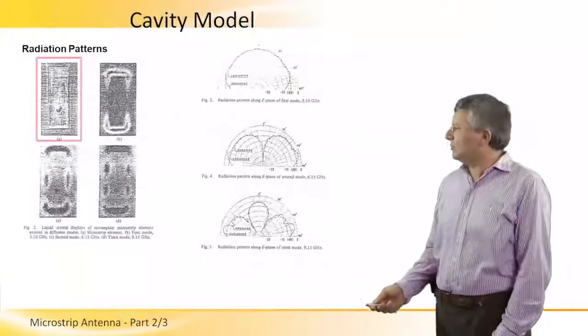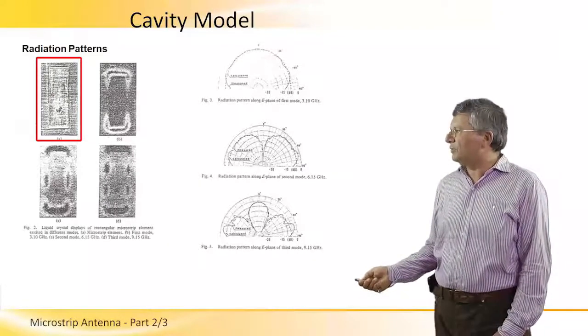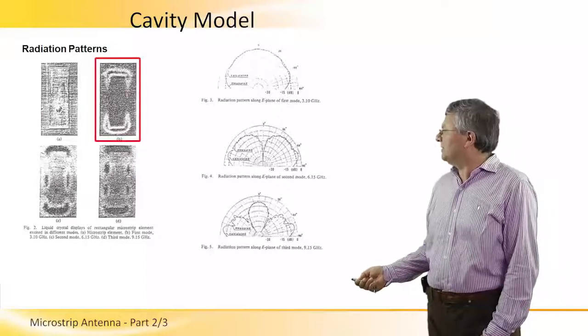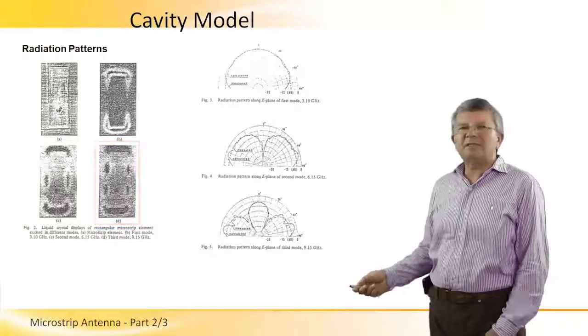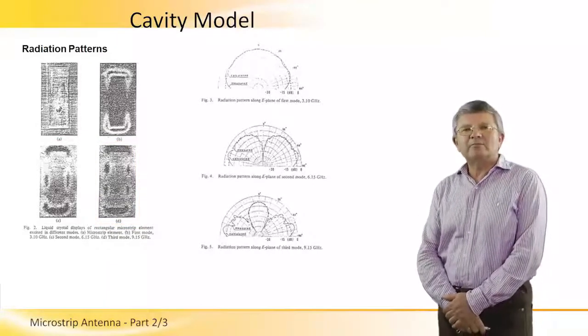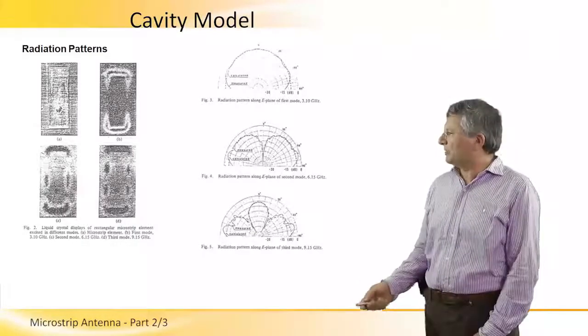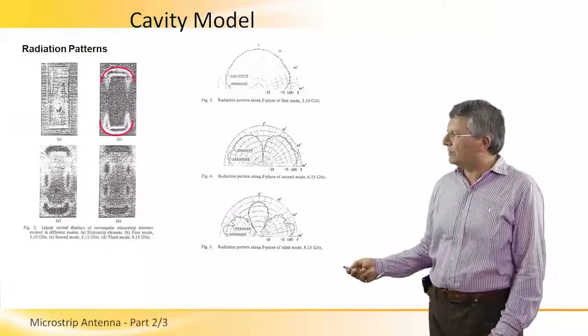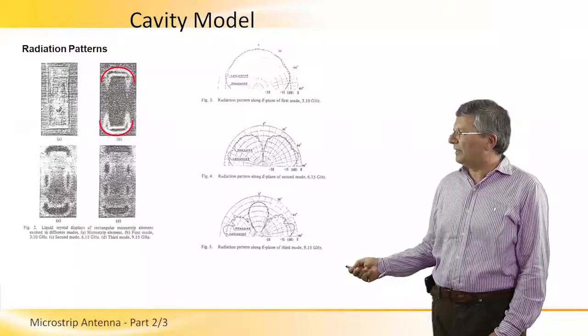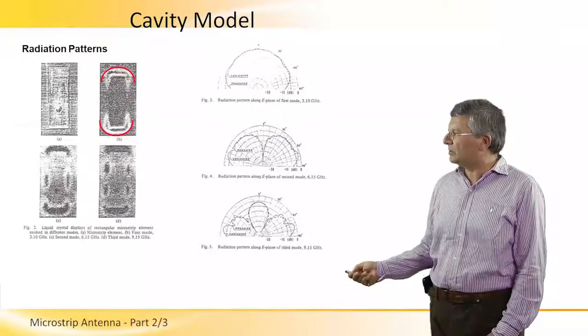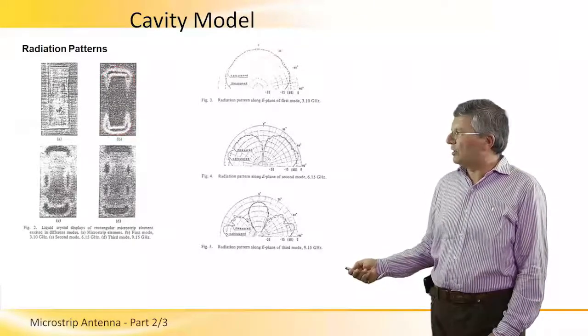Here we see actually what happens to this patch antenna at three frequencies, at three gigahertz, six and nine gigahertz. At those three frequencies, we obtain actually different types of modes that propagate, that exist in the resonant cavity of the patch, such that for the lowest frequency, three gigahertz, we can identify actually those two radiating slots that I mentioned before on the edges of the patch.